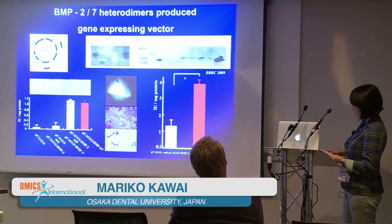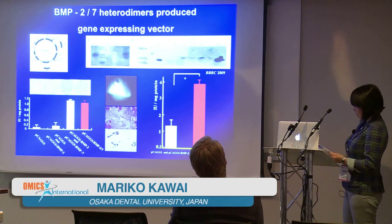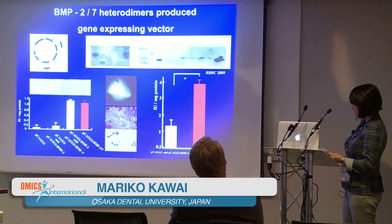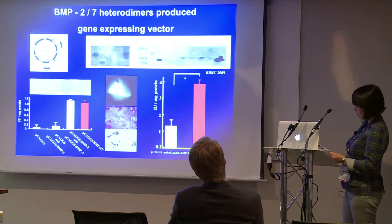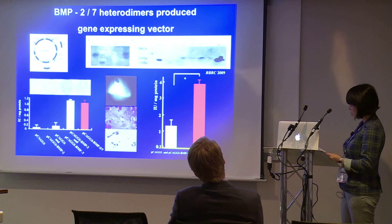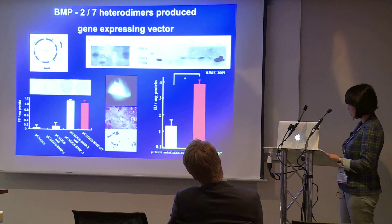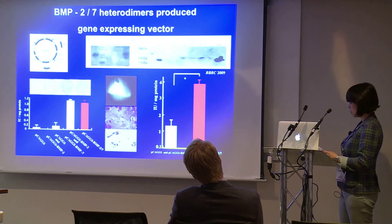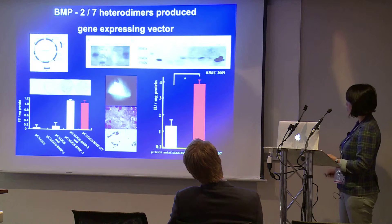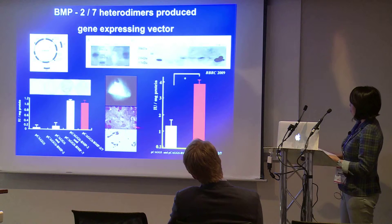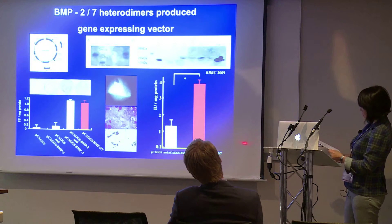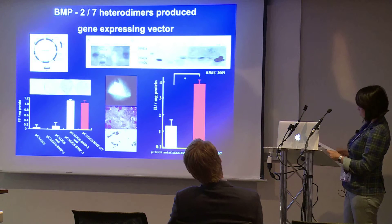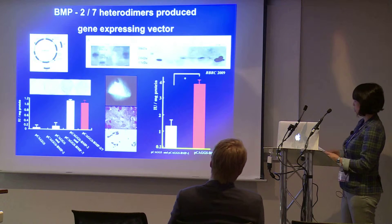In vivo study, alkaline phosphatase activity assay revealed the same ability with simultaneous BMP2 and BMP7 gene transfer and the BMP2/7 heterodimer-producing vector. Also in the in vivo study, we found the strong ability to induce bone formation in the muscles.